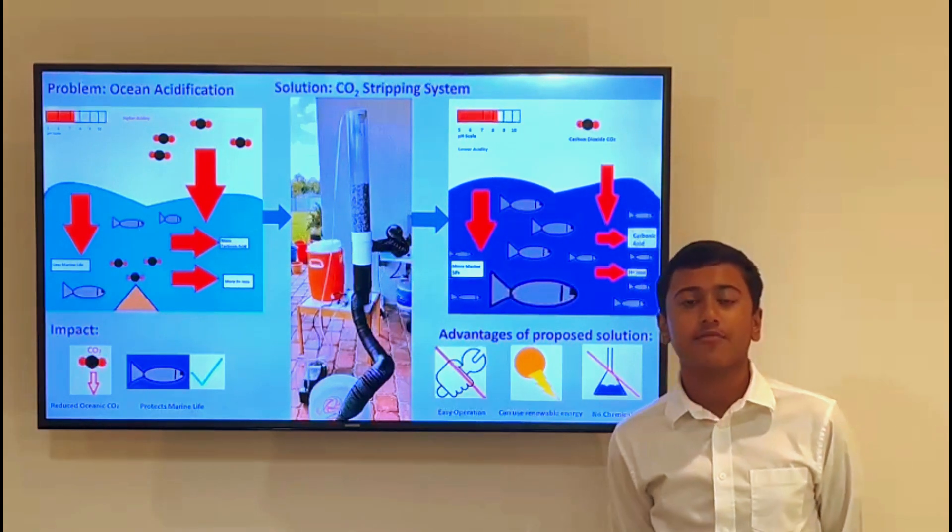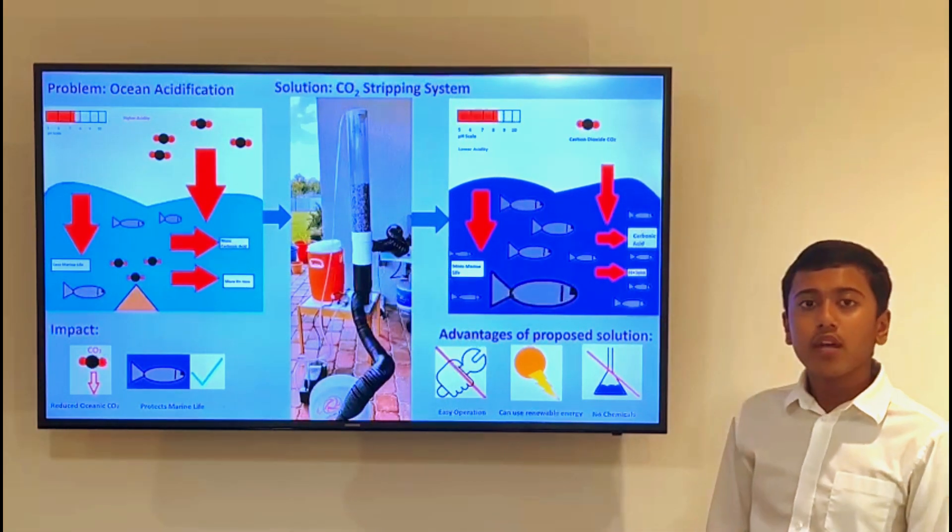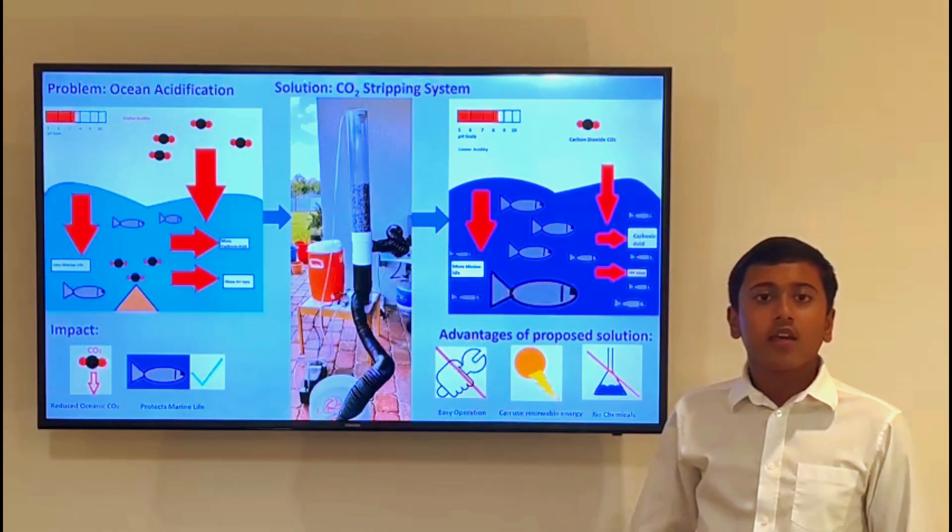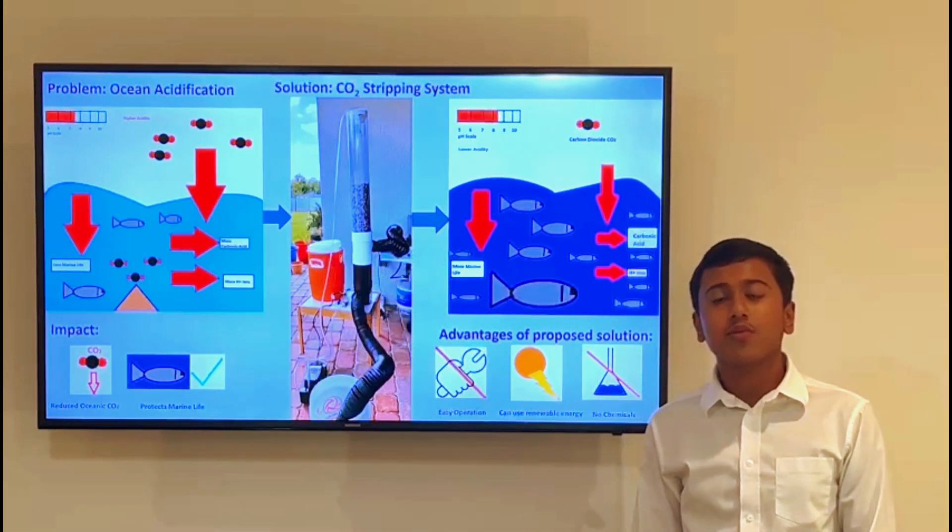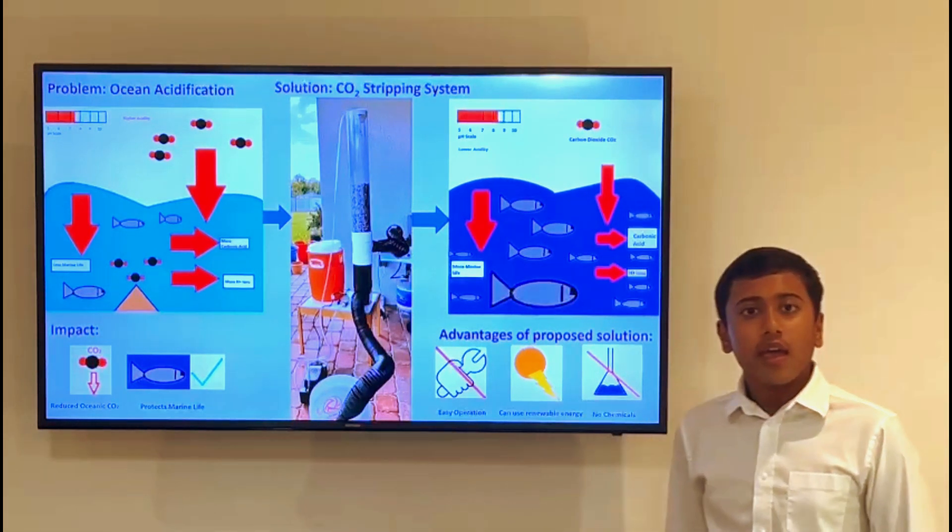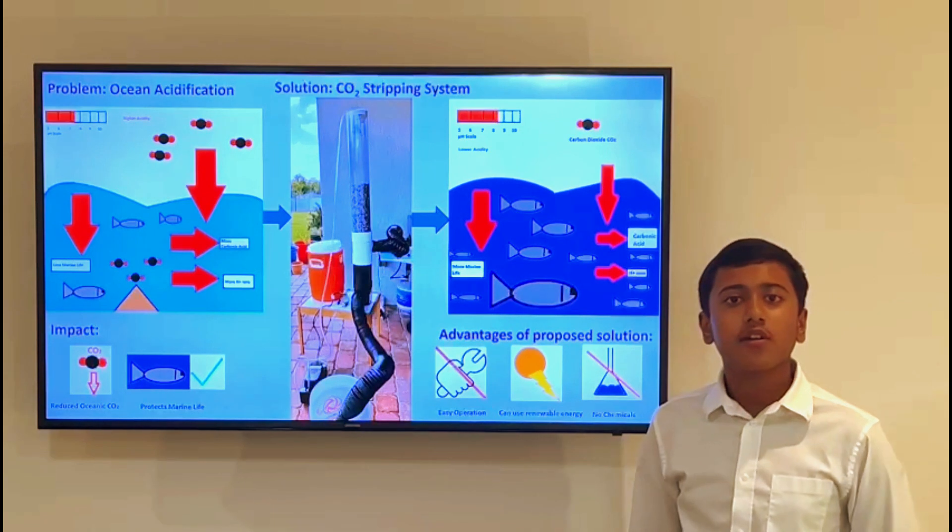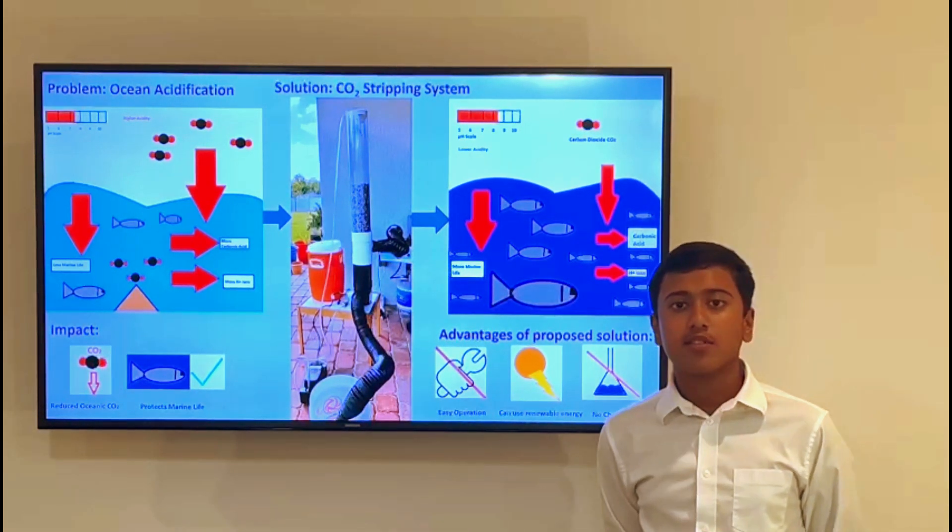To help mitigate these effects, I have created a working prototype of a carbon dioxide stripping column system shown here. This can be used with renewable energy and pushes a majority of the CO2 out of the water along with its concentration gradient into the atmosphere.